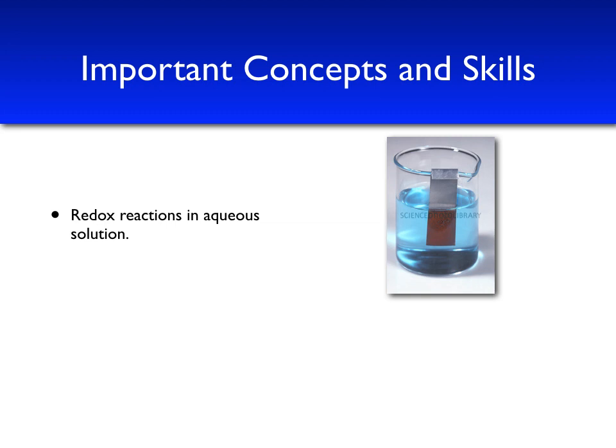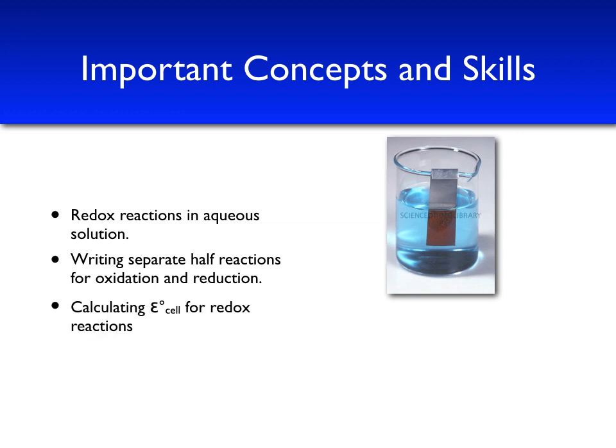In this experiment, other than observing different redox behavior, you'll be asked to write separate half reactions for both oxidation and reduction based on the observations that you see and the list of half reactions provided. You'll also get to use these standard reduction potentials to calculate a standard cell potential for the redox reactions. You might remember from lecture that if the standard cell potential is positive, that means that the reaction is spontaneous.